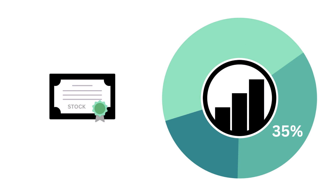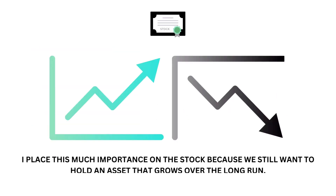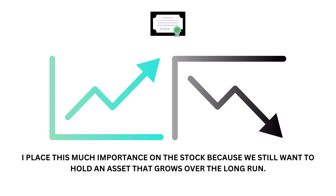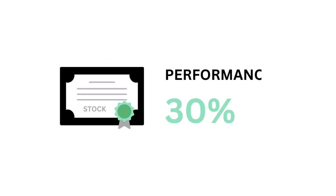Let's then look at the stock. The stock factor accounts for 35% of the analysis. The stock asks the question: will the company's stock perform well enough in the future to justify an investment? I place this much importance on the stock because we still want to hold an asset that grows over the long run, and a good history of stock growth and a good entry is key to long-term success. There are four metrics that make up the stock factor, from performance to Wall Street, each weighted based on importance to the price.